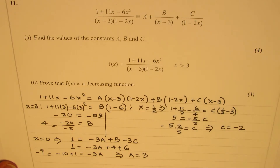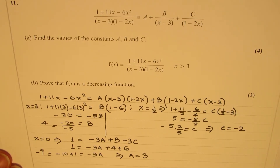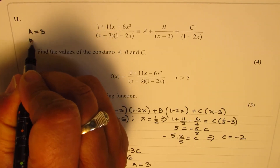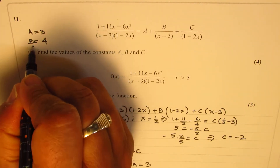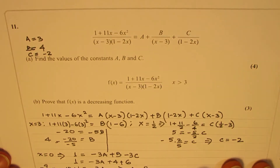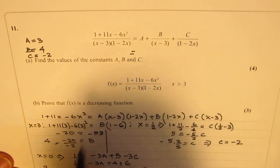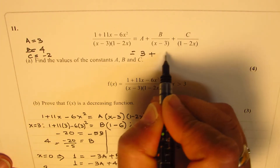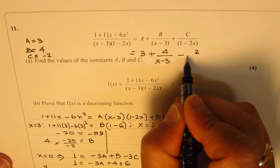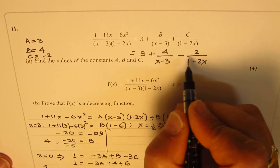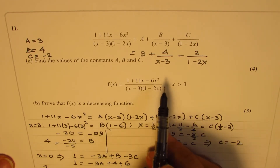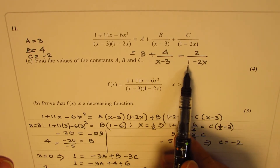So we can write down the right side now. The value of a came out to be 3, for b it was 4, and for c it was -2. So we can rewrite the given rational function as 3 + 4/(x - 3) - 2/(1 - 2x). Of course, it has restrictions that x cannot be 3 and x cannot be 1/2.